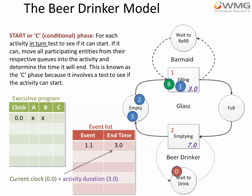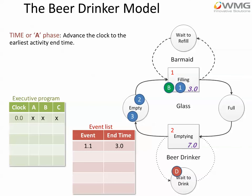We put a tick in the box in the executive program to show where we've got to in the algorithm, and we move on to the next phase — the time advance, or A phase. We advance the clock to the earliest activity end time, which is simple here because there is only one event in the event list. In a large simulation the event list might have hundreds or thousands of events. In this case it's three, so we advance the clock to time three, and we can now move to the bound phase — the B phase.